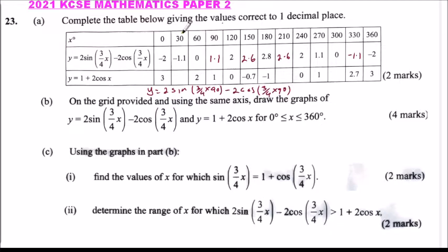For the second function, do the same: when x = 30, substitute y = 1 + 2cos(30) and you find the value is 2.7. When x = 210 it is minus 0.7, and when x = 300 you find the value of y is 2. If you get those values you'll get two marks.